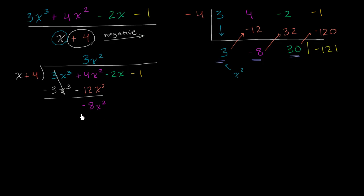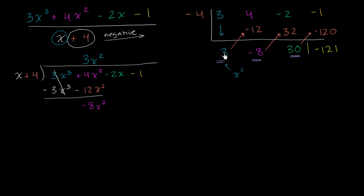So once again, you're probably seeing some parallels. You had the 4x squared over here — we just wrote the coefficient, but that's what it represented: 4x squared, we wrote the 4 there. Then we essentially subtracted 12x squared. The way we got that 12, we multiplied 3 times 4 and then subtracted. Here in synthetic division, we're multiplying 3 times negative 4 — essentially multiplying 3 times 4 and then subtracting. That's why we put that negative there, so we don't have to keep remembering to subtract this row and we could just keep adding them. We multiplied 3 times this 4 and now we subtracted.